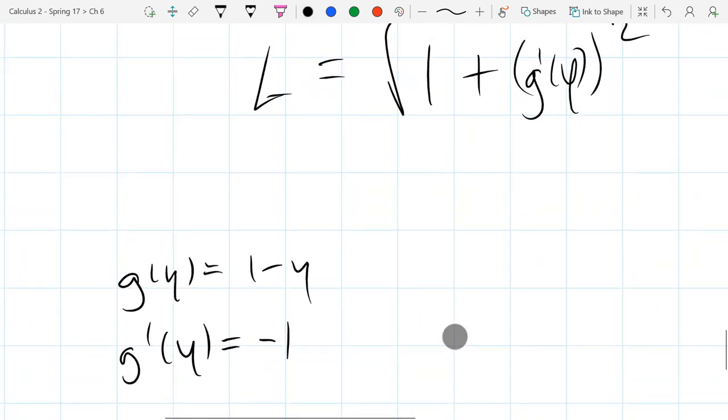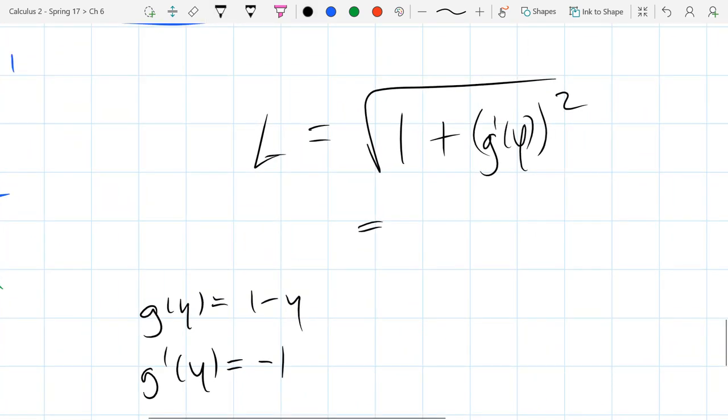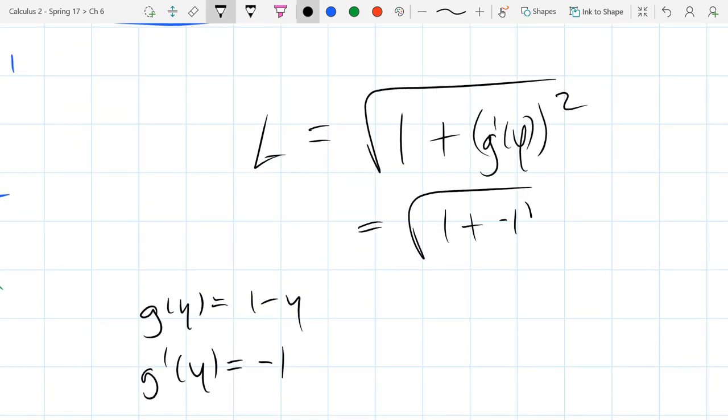That's the nicest derivative we'll probably have in a length function. So we got negative 1 squared, which is square root 2. So that's our length.